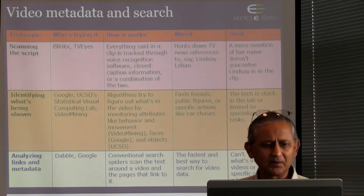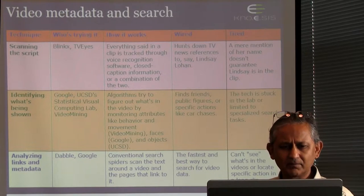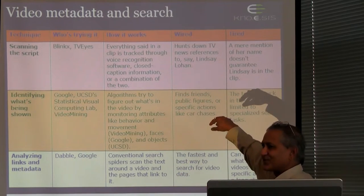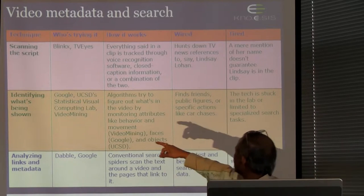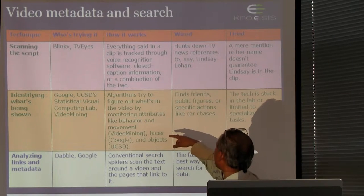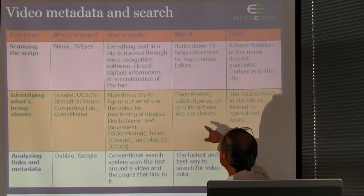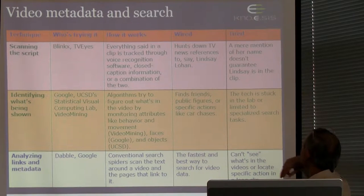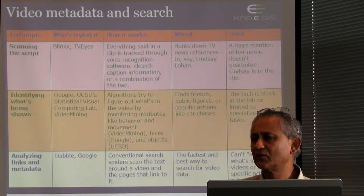Here, you are talking about video data, and there are a broad variety of video data. You can see a technique — who is trying it, how it works, whether it works or not. Identify what is being shown. Statistical visual computer algorithms, like video mining, try to figure out what is in the video by monitoring attributes like behavior, movement, faces, and objects — finding friends, public figures, specific actions like car chases. The metadata is a very important component.